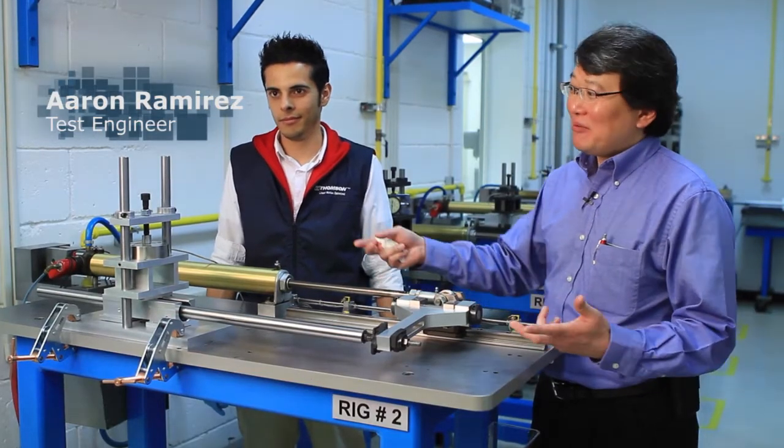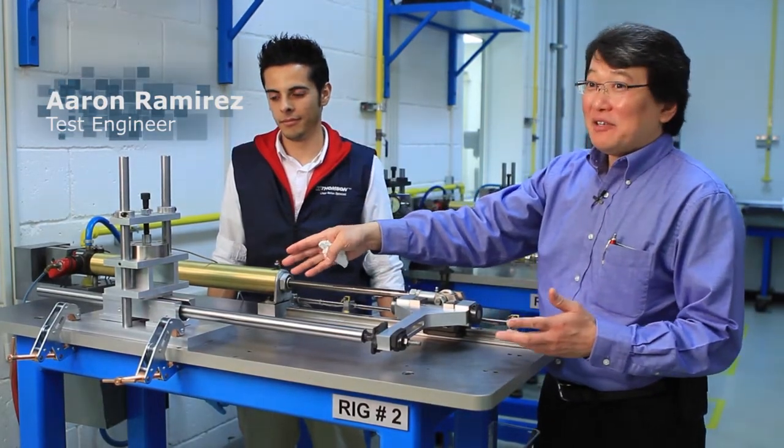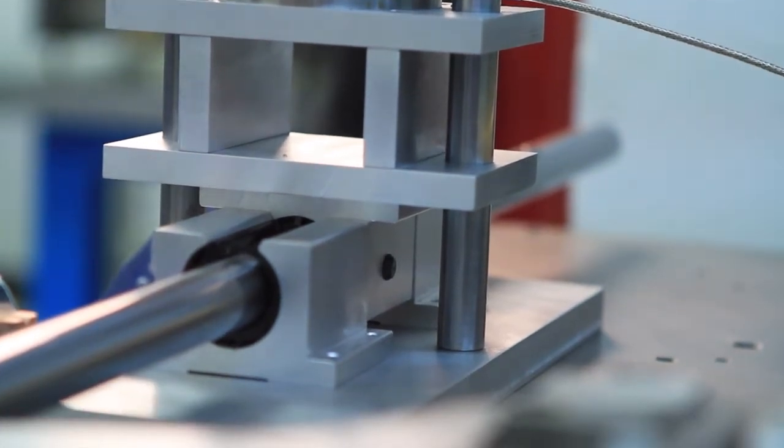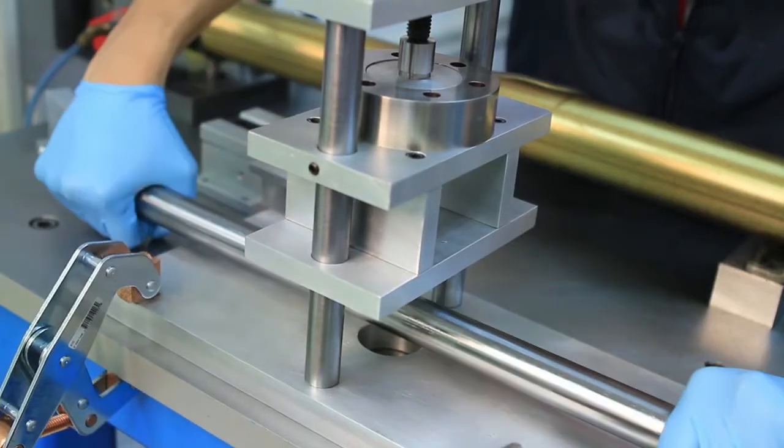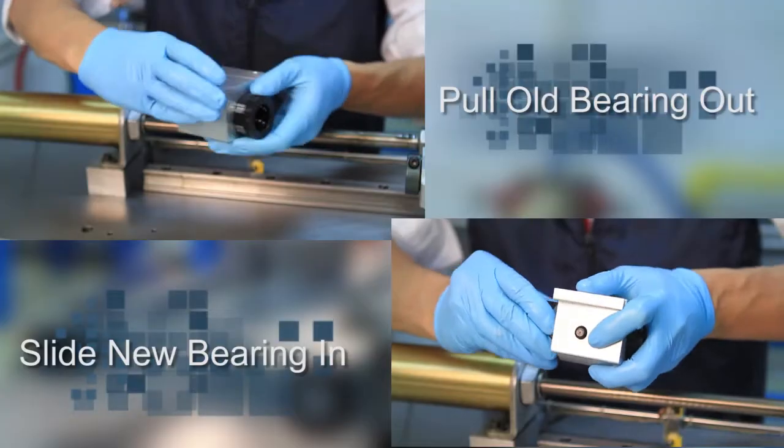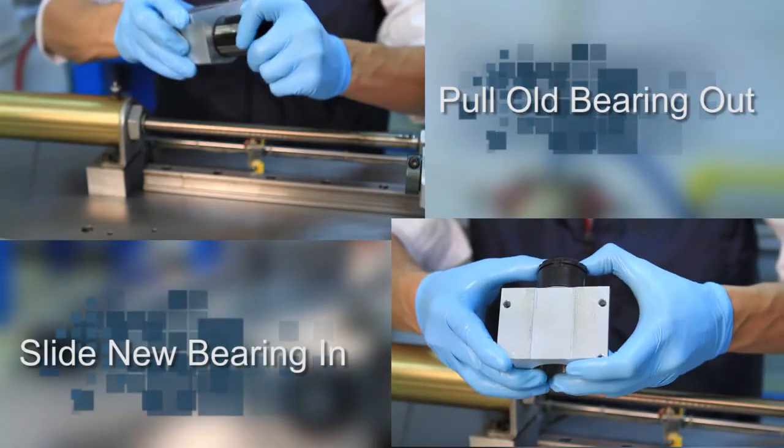So what we're going to do right now is take out the failed bearing. He's going to unload the load cell, block off the load plate, pull the shaft out, replace the bearing, and put in a brand new bearing.